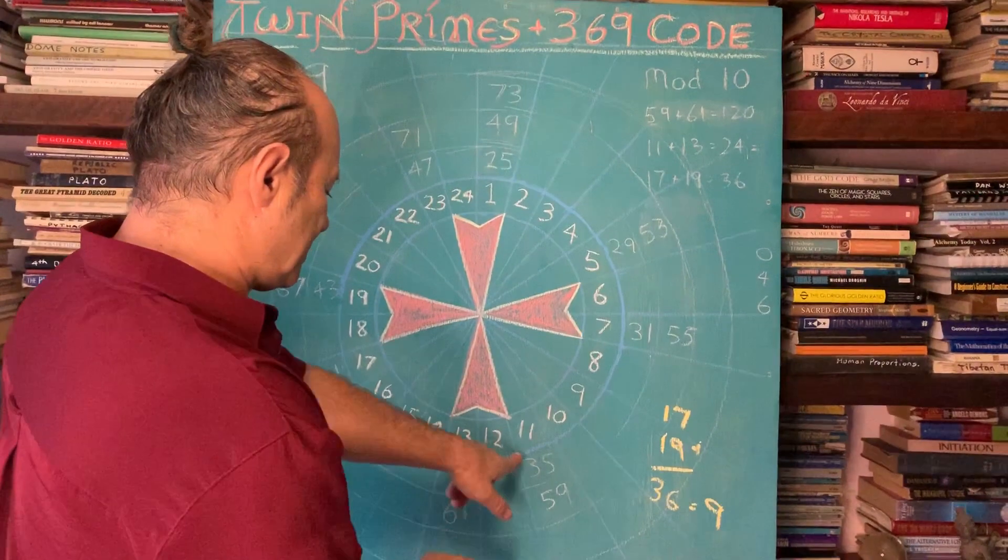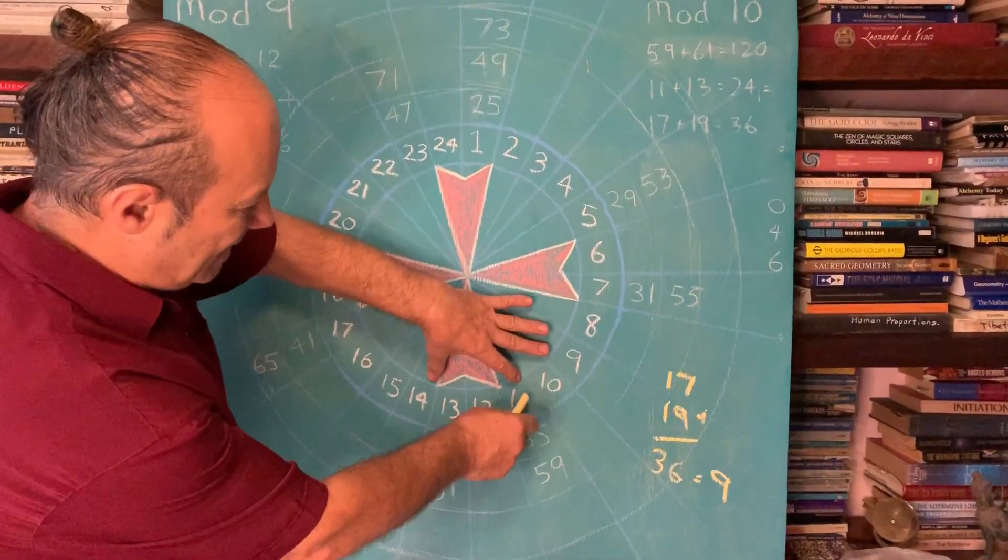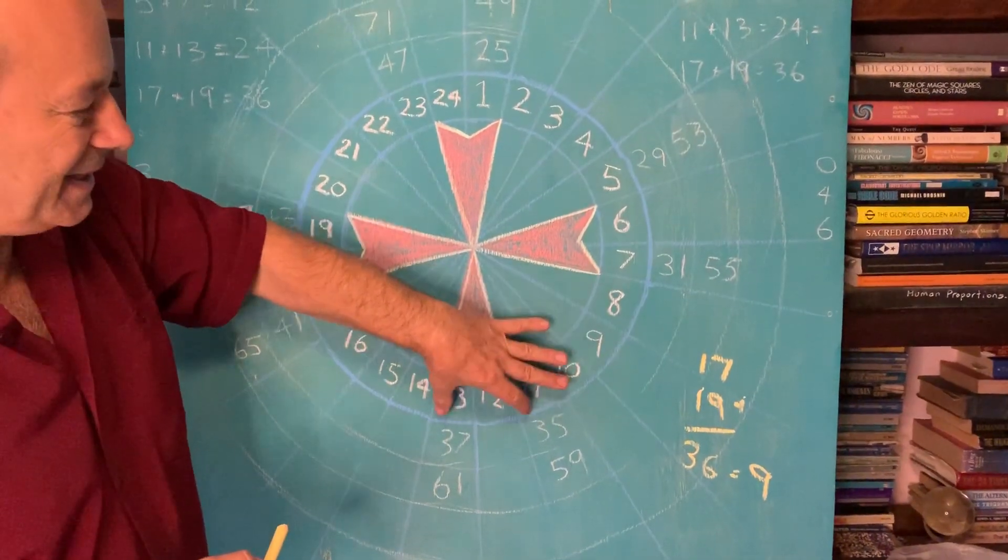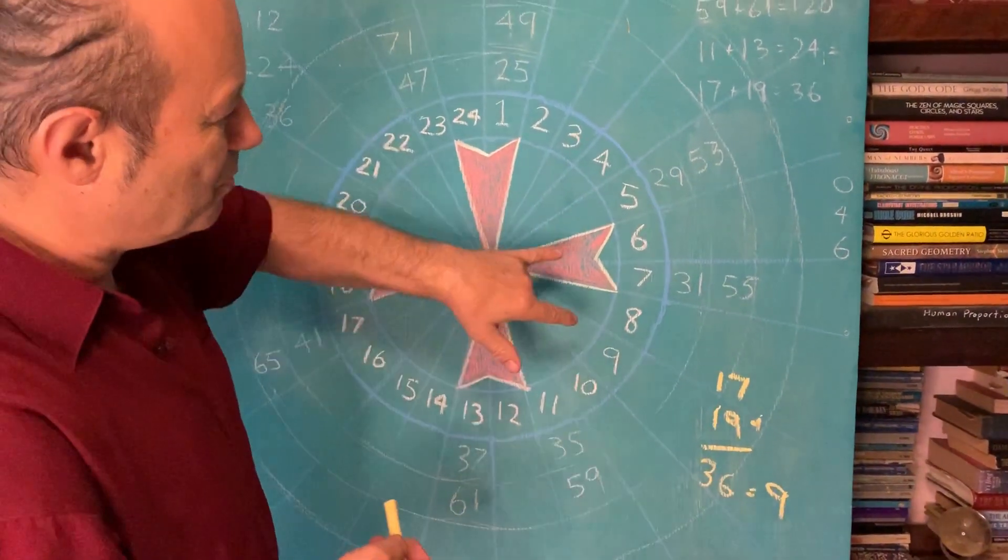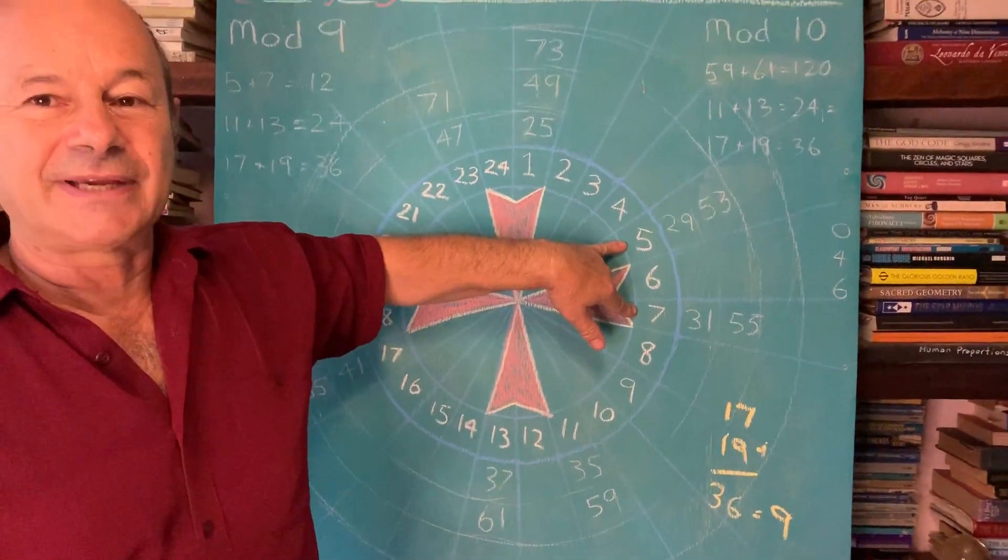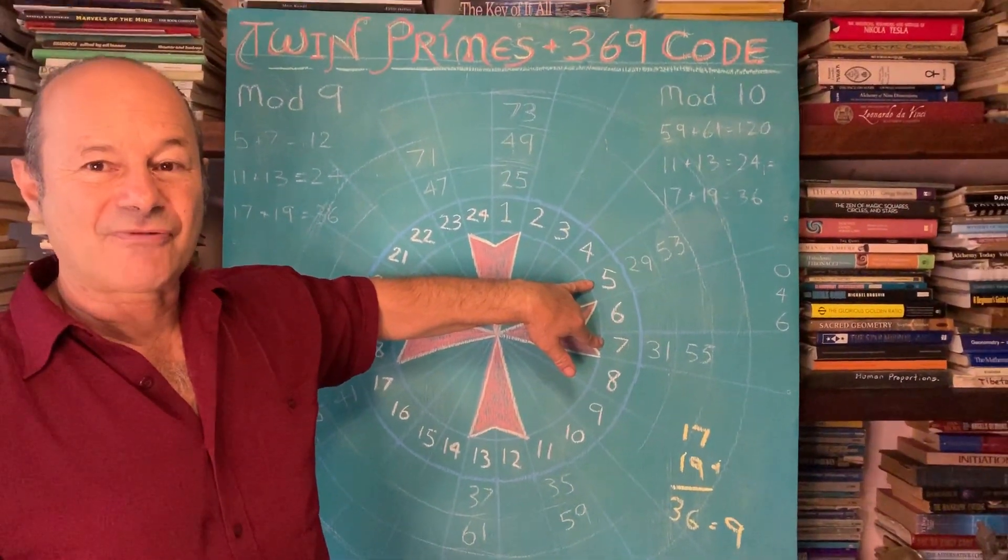You could look at these two twin primes, 11 and 13. 11 and 13 add up to 24. The sum of 24 is 6. So let's find another twin prime, 5 and 7. Five and 7 is 12. Take away 9, we end up with 3. Or you could have said 12 is 1 plus 2 equals 3.